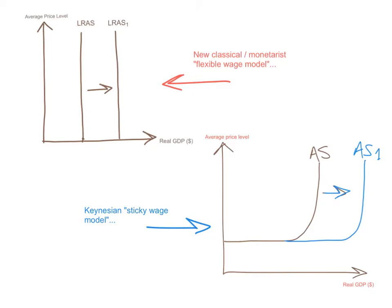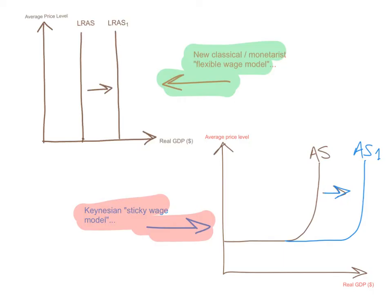What does that look like in each of those models? A shift of the Long Run Aggregate Supply curve in the new classical or monetarist flexible wage model shows the curve — which is vertical, inelastic, and independent of the average price level — shifting to the right. The opposite is true if something causes it to shift left, like the destruction of natural resources due to a major war. In the Keynesian Sticky Wage model, the Long Run Aggregate Supply curve looks a little different, but again, if it increases it shifts right, and if it decreases it shifts left.